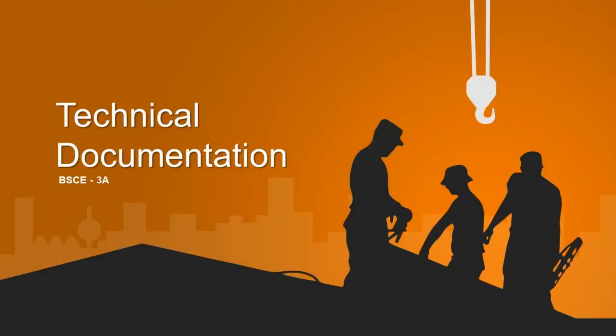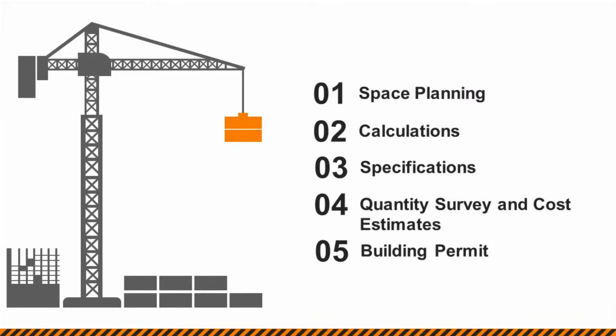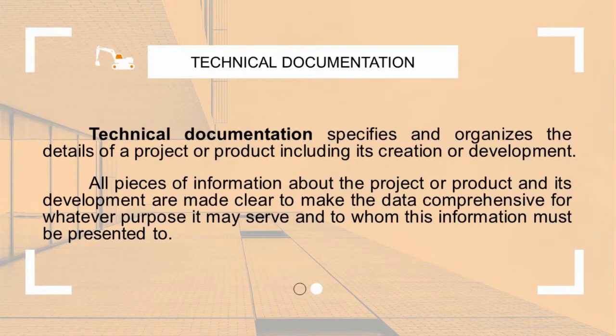Technical Documentation. There are five subtopics for technical documentation. These are space planning, calculations, specifications, quantity survey and cost estimates, and building permits. Technical documentation specifies and organizes the details of a project or product, including its creation or development. All pieces of information about the project or product and its development are made clear to make the data comprehensive for whatever purpose it may serve, and to whom this information must be presented.